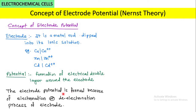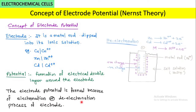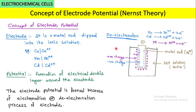The electrode potential is formed because of two processes: the de-electronation process and the electronation process of the electrode. The de-electronation process means oxidation — loss of electrons. Zinc undergoes oxidation and forms Zn²⁺ and two electrons. Similarly, cadmium forms Cd²⁺ and two electrons.